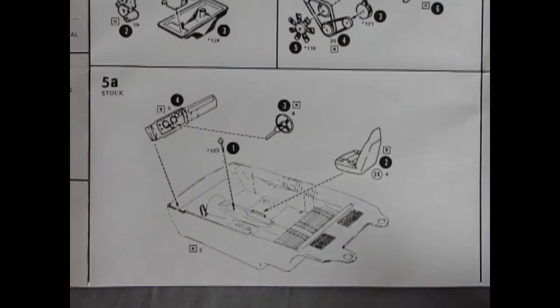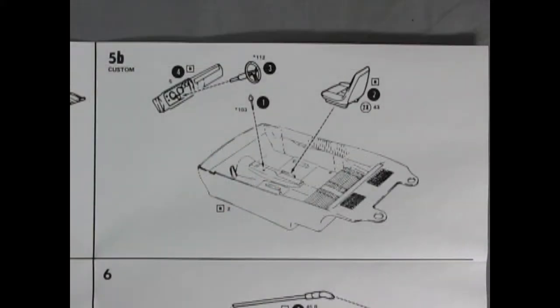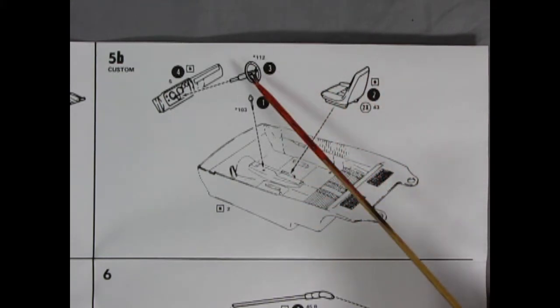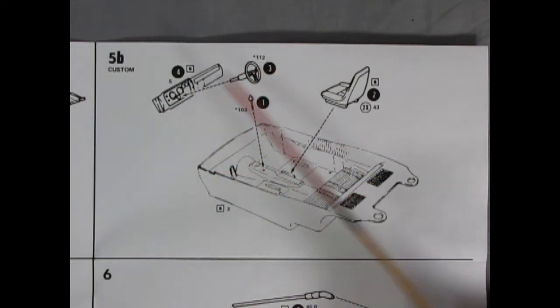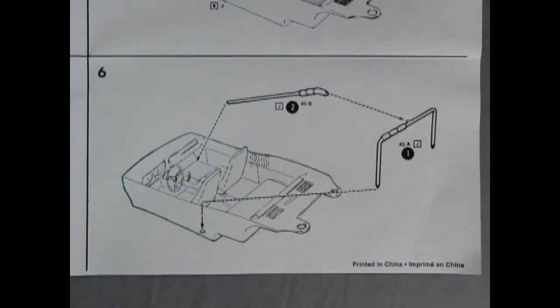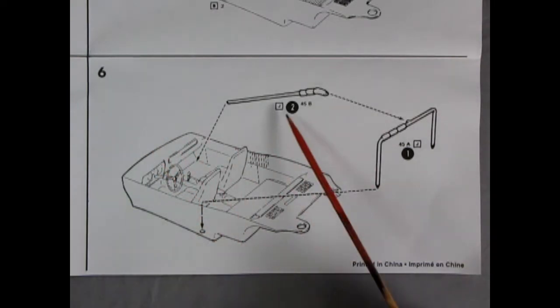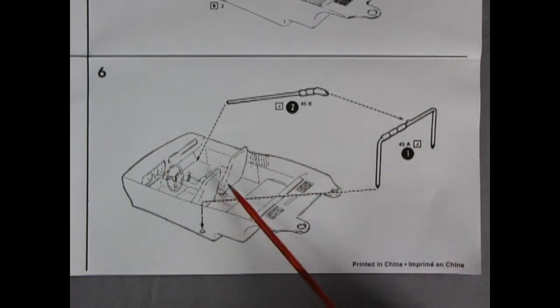Step five shows our interior tub going together. Here we have the two bucket seats going in place as well as our steering wheel, the chrome shifter and our dashboard. Image 5b shows our custom interior going together with alternate bucket seats going into the tub with our shift lever as well as our chrome plated steering wheel this time around and our dashboard. And to continue our custom interior, step six shows our two-piece roll bar being glued into place.